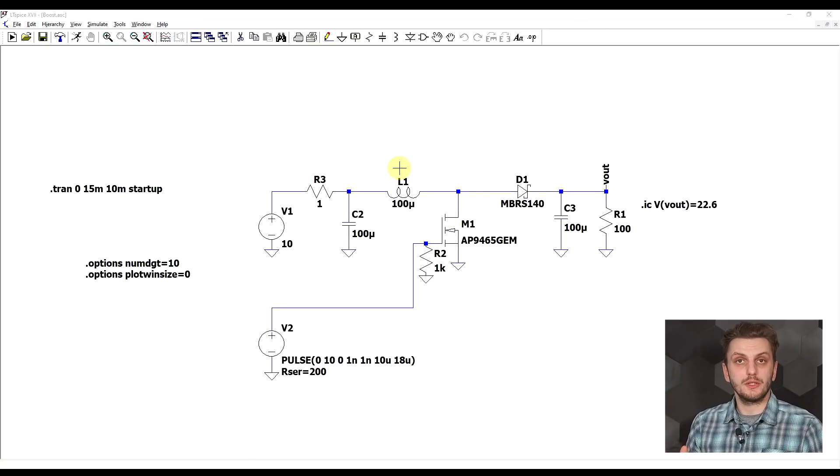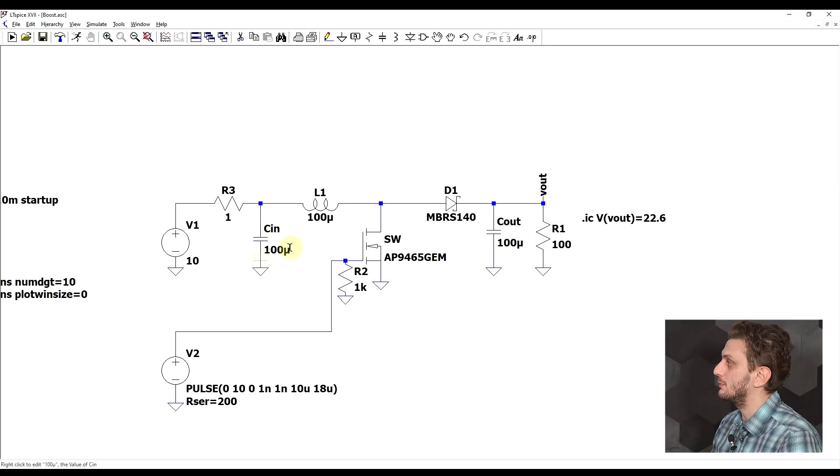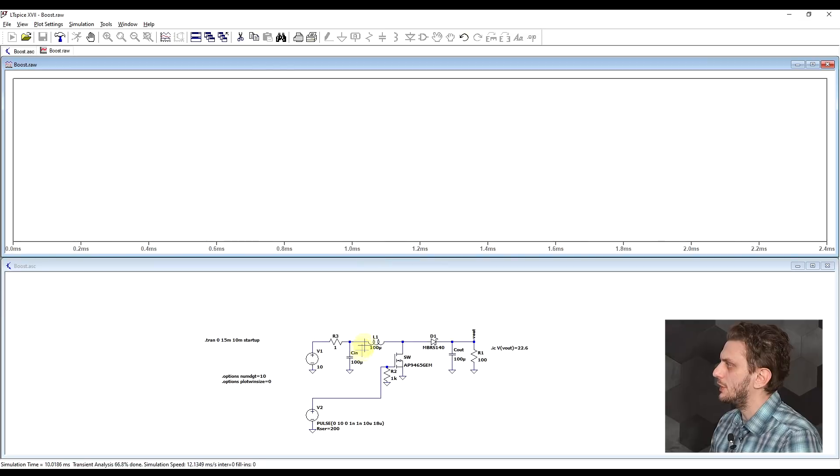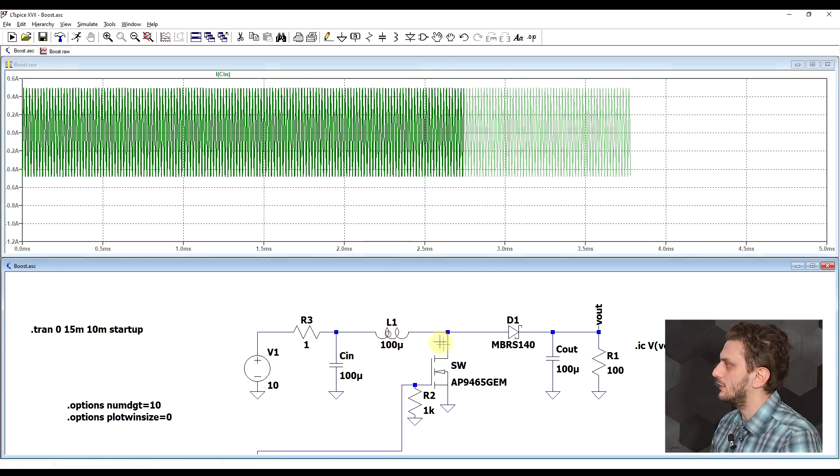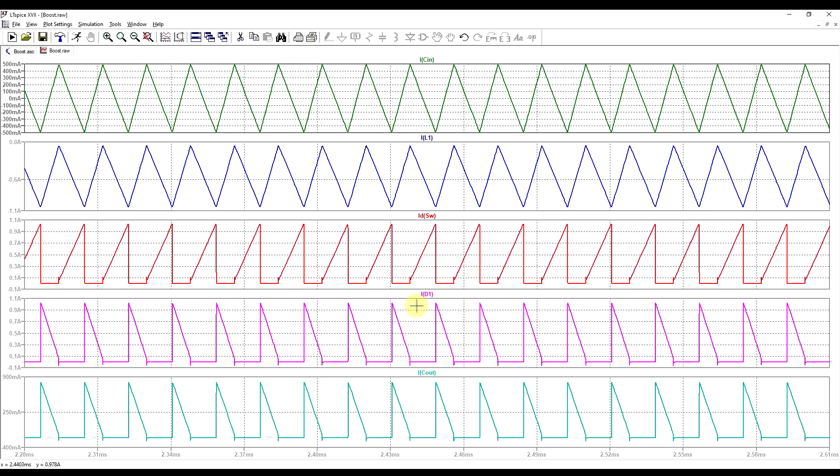Now we can check out the currents that normally pass through a boost converter by using a circuit simulation. LTSpice, of course. So this will be far easier than to measure the circuit. So what I got here is a basic boost converter. So we got our input capacitor, the inductor, the switch, the diode, and then the output capacitor. So if we run the simulation and have a look at the currents running through the various components, and we zoom in a bit,